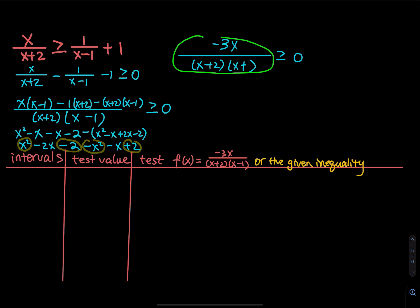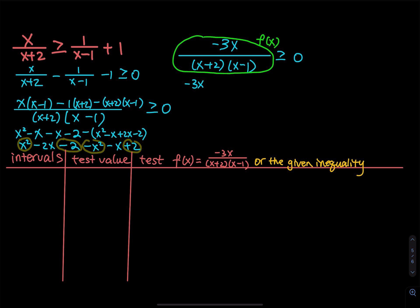I'm going to claim this as my f of x — that's negative 3x divided by (x plus 2)(x minus 1). For rational inequality, you have to take care of both the numerator and denominator. So when you set f(x) equal to 0, you solve negative 3x equals 0, x plus 2 equals 0, and x minus 1 equals 0. The key numbers are x equals 0, x equals negative 2, and x equals 1.